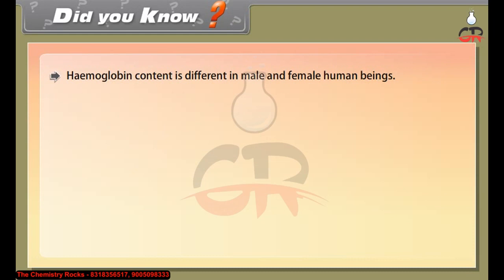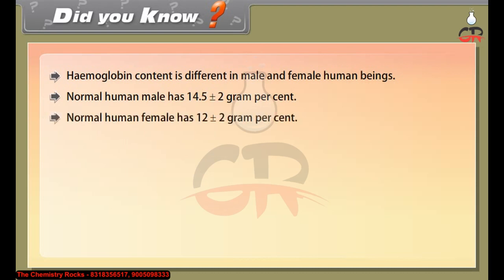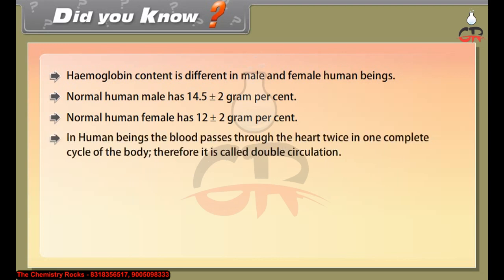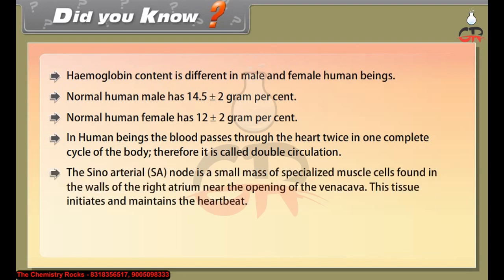In human beings, blood passes through the heart twice in one complete cycle of the body; therefore it is called double circulation. The sino-atrial (SA) node is a small mass of specialized muscle cells found in the walls of the right atrium near the opening of the vena cava. This tissue initiates and maintains the heartbeat. When it fails to function, an electronic device called a pacemaker is implanted into the chest of the patient to maintain the heartbeat.